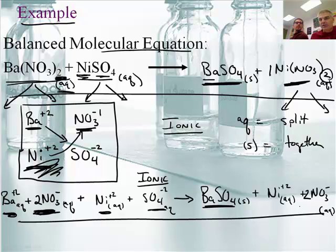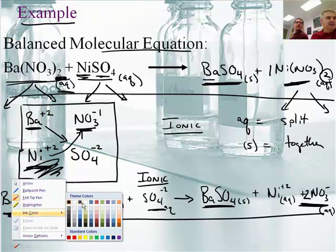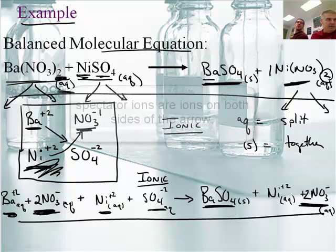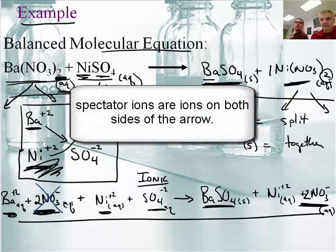Right. Because there's still nickel and nitrate on the other side of the equation. So they are considered spectators. So in a net ionic reaction, you need to cancel out the spectators. Yes. So if you look at 2NO₃ here, and 2NO₃ here.